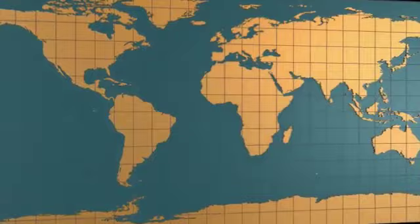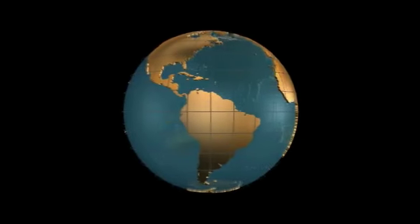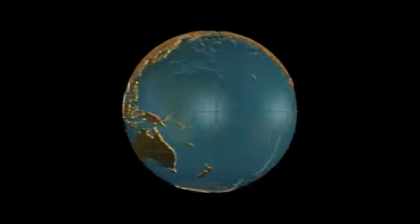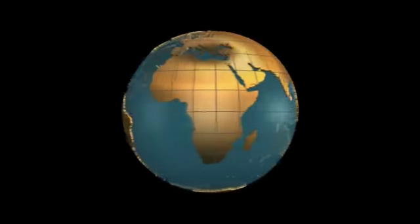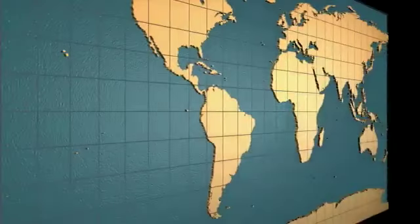The parallels and meridians on the globe form a net that is called a graticule. This facilitates determining the location of a place.